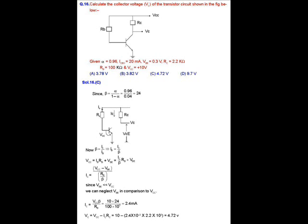The given values are: α, the current gain, equals 0.96; Vbe, the potential difference between base and emitter, is 0.3 volts; Rc, collector resistance, equals 2.2 kilo ohms; and Rb, the base resistance, is 100 kilo ohms. The input supply of the circuit is 10 volts, so Vcc is given to us as 10 volts.